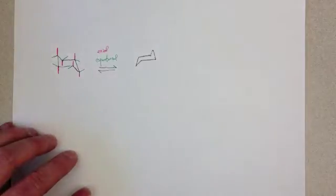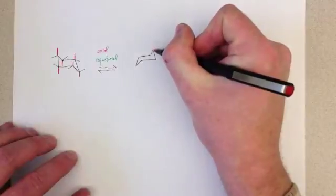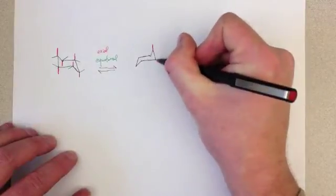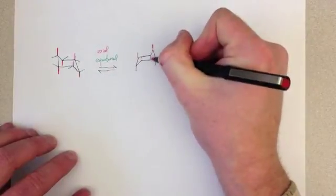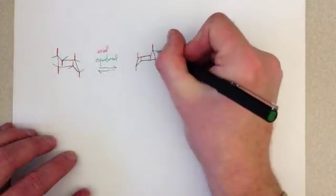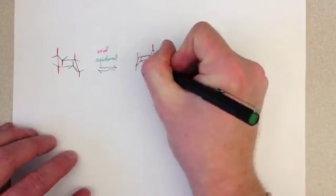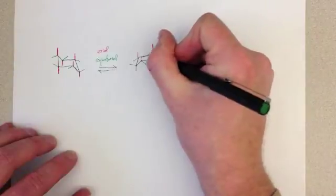And remembering what I know about axial and equatorial, I can still label axial and equatorial positions here. Here's my head. Axial has to go up. So then we alternate axial positions, and that designates where the equatorial positions are going to be.